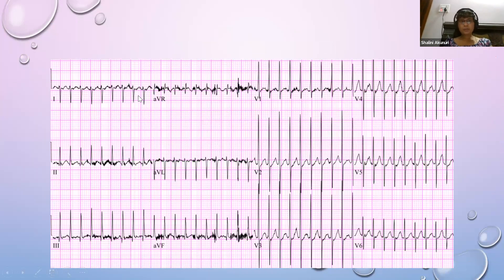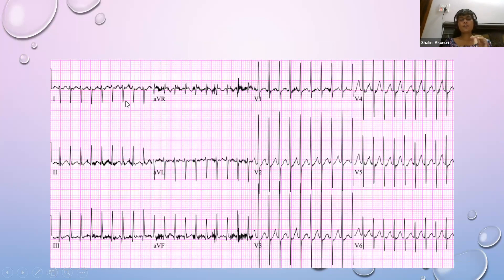Analyzing this rhythm: it is regular and narrow complex. Narrow complex tachycardias are most often supraventricular, while wide complex tachycardias are most often ventricular, with a few exceptions.